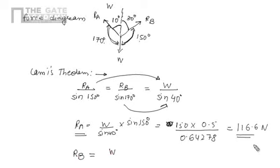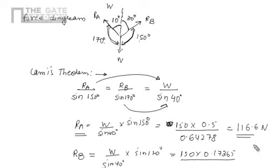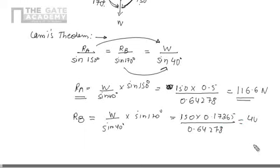For RB: RB = W × sin 170 / sin 40 = 150 × 0.17365 / 0.64278 = 40.5 N. From this problem we learn two things: first, when three forces act on a body in equilibrium, they must be concurrent; second, we can find the angle between the reaction and the vertical using the thumb rule — the reaction at an inclined plane makes the same angle with the vertical as the inclined plane makes with the horizontal at the corresponding point.